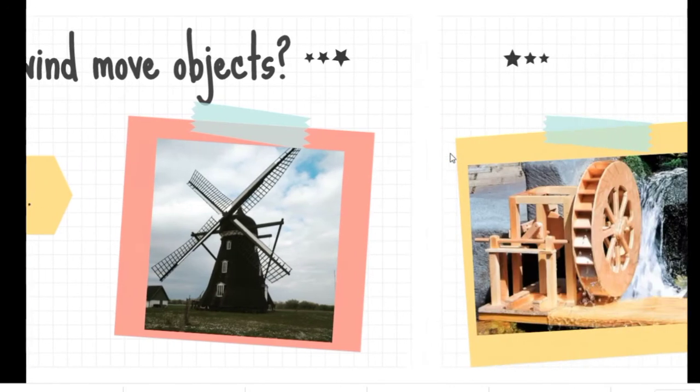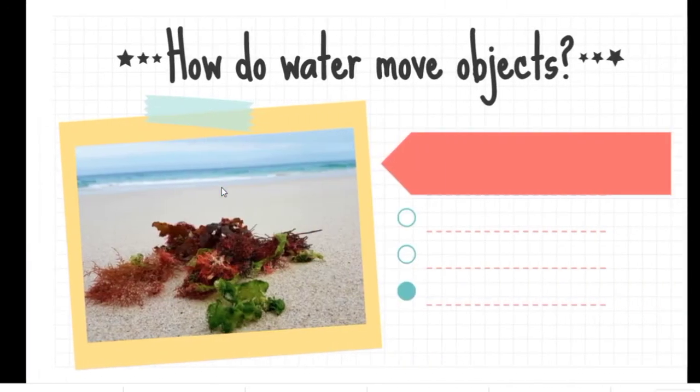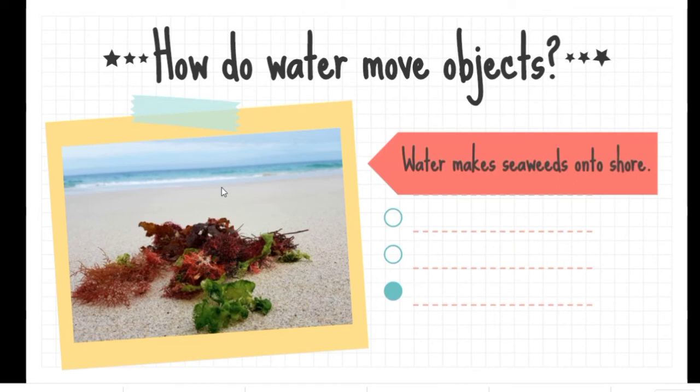All right, now how does water move objects? Look at this picture: water makes the water wheel move. What else? Water makes seaweed wash onto shore.